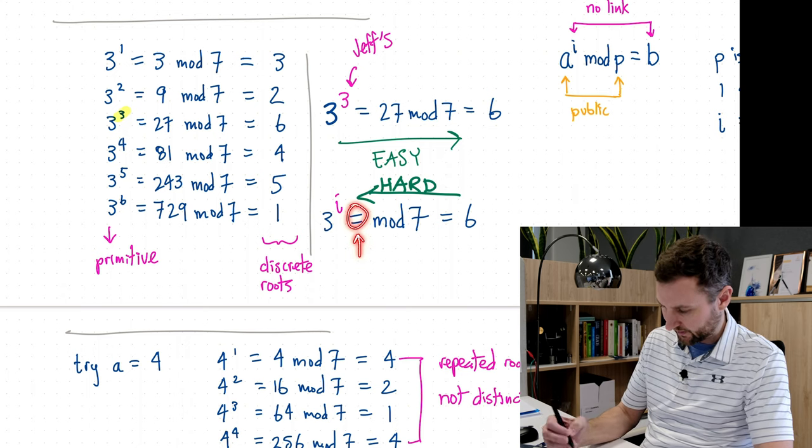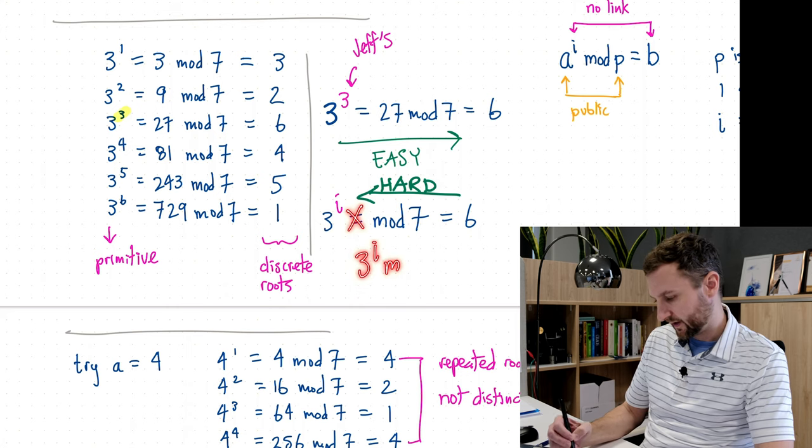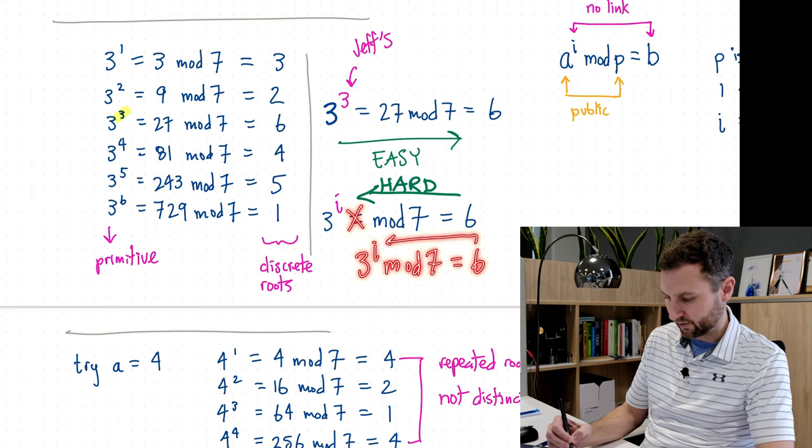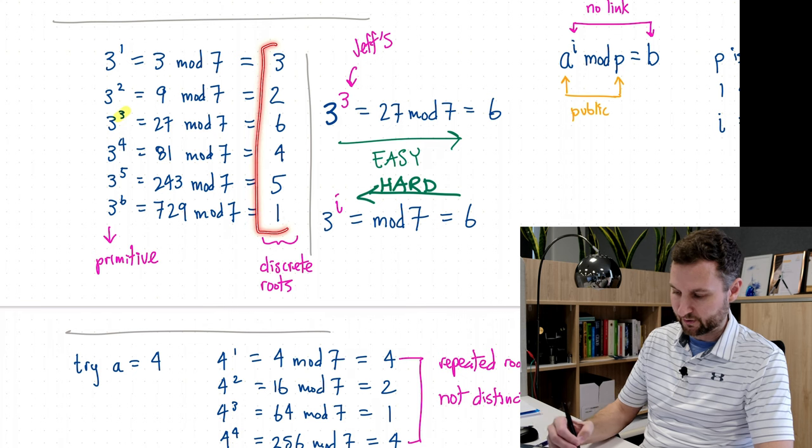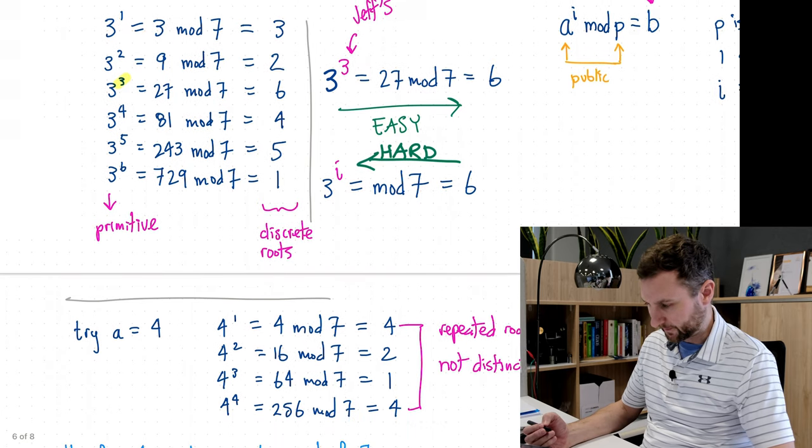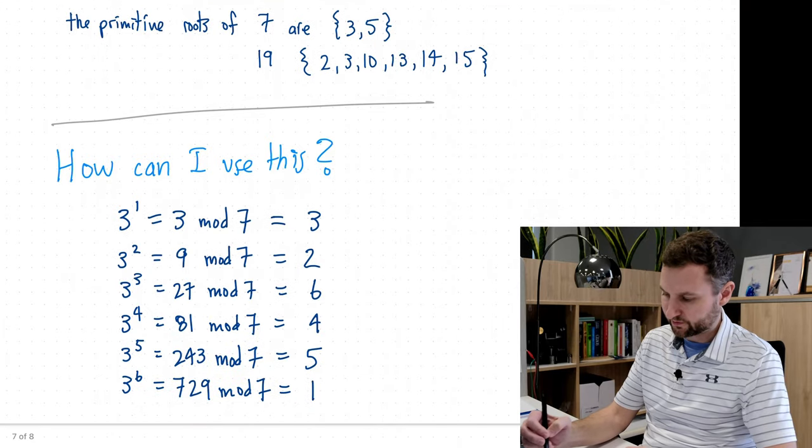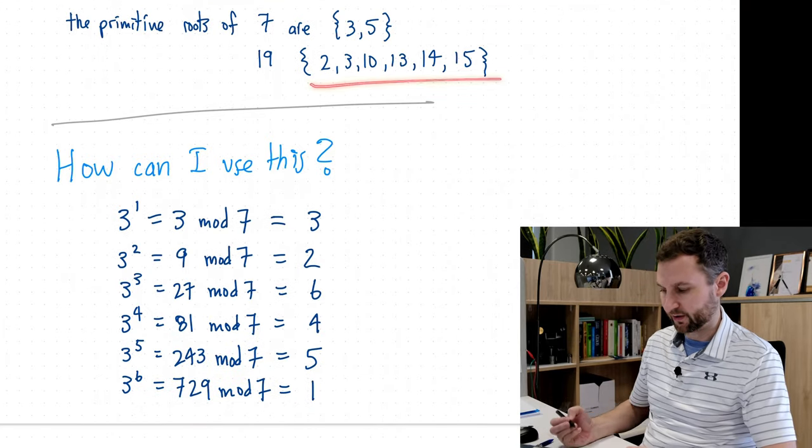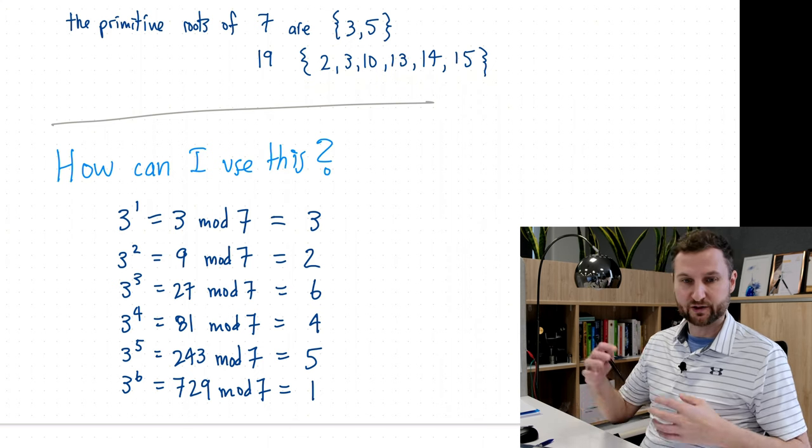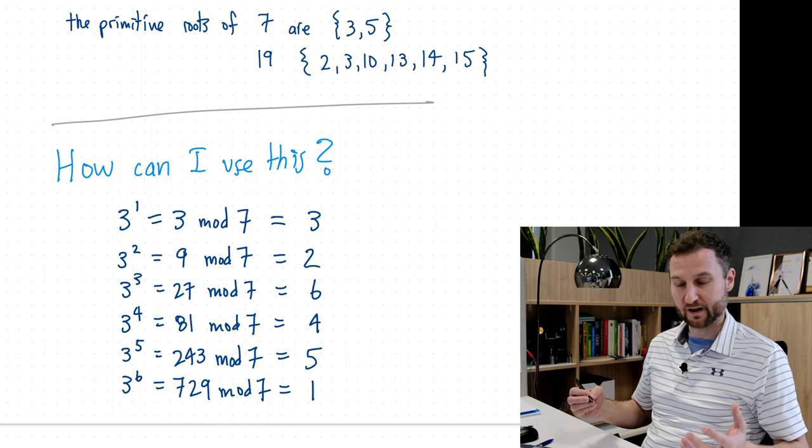Just a note here, this equal sign should not be there. We just have 3 to the i mod 7 equals 6, and I don't know what i is without pre-computing this whole table in advance. So that's the hard problem of the discrete log. We tried a equals 4 there, we found two primitive roots of 7, 3 and 5, and then just showed that there's actually lots of primitive roots of prime numbers, so it's not obvious which the primitive roots are without doing all the calculation.